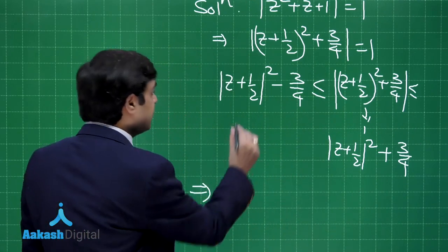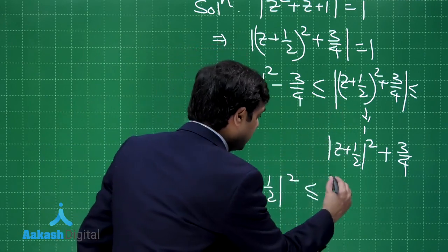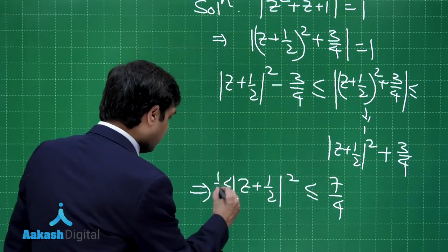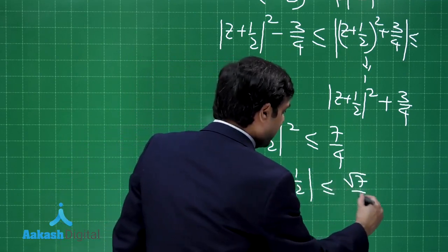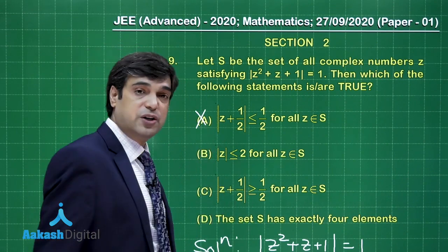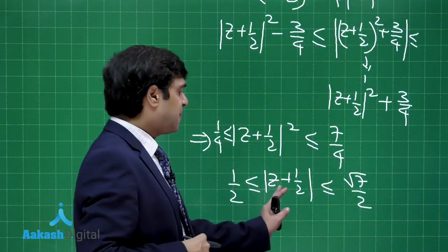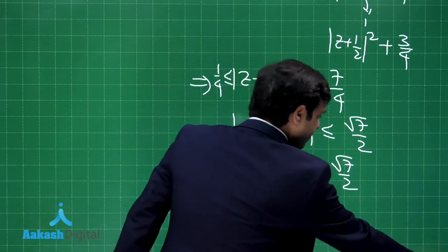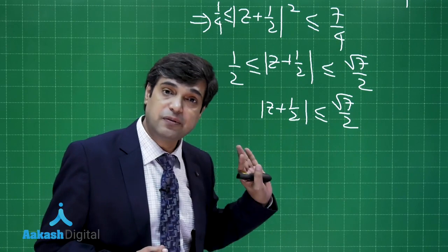From the inequality, we get 1/4 ≤ |z+1/2|² ≤ 7/4, so 1/2 ≤ |z+1/2| ≤ √7/2. Option A says |z+1/2| ≤ 1/2 — not true (it must be ≥ 1/2). Option C, that |z+1/2| ≥ 1/2, is clearly true. For option B, |z+1/2| ≤ √7/2, and using the triangle inequality |z+1/2| ≥ |z|-1/2, so |z| ≤ |z+1/2| + 1/2 ≤ (√7+1)/2, which is less than 2 — correct.